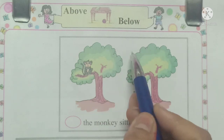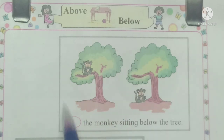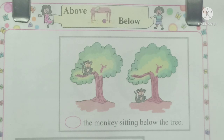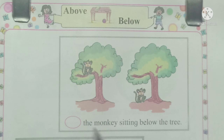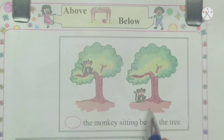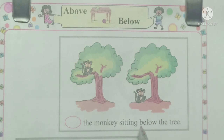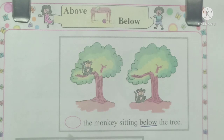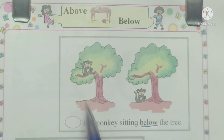Below means 'खाली'. Ok, now let's do the next questions. Look here — what question is given? Circle the monkey sitting below the tree. See, here is the word 'below': B, E, L, O, W — below. Circle the monkey sitting below the tree.